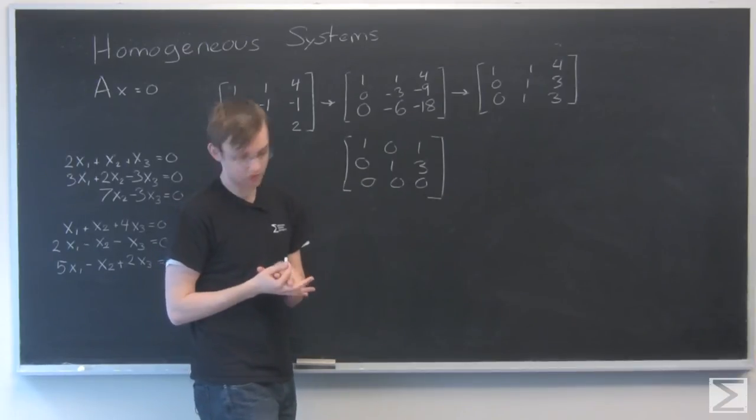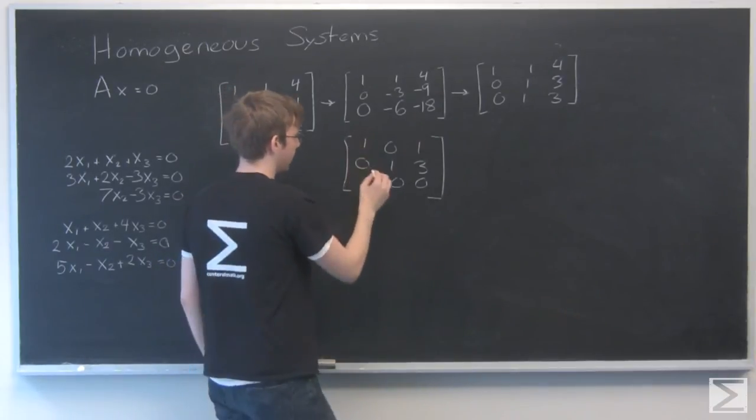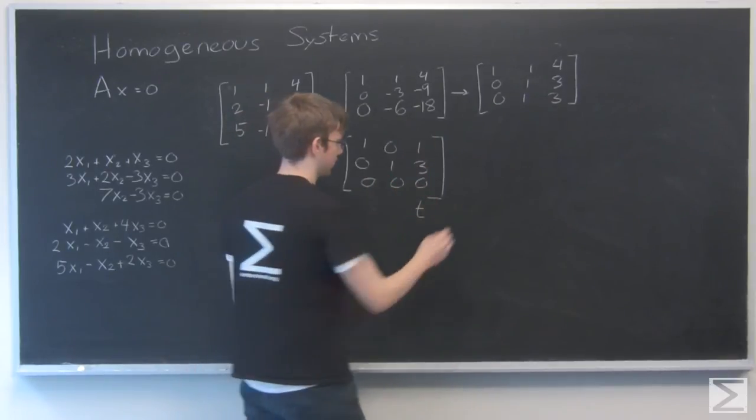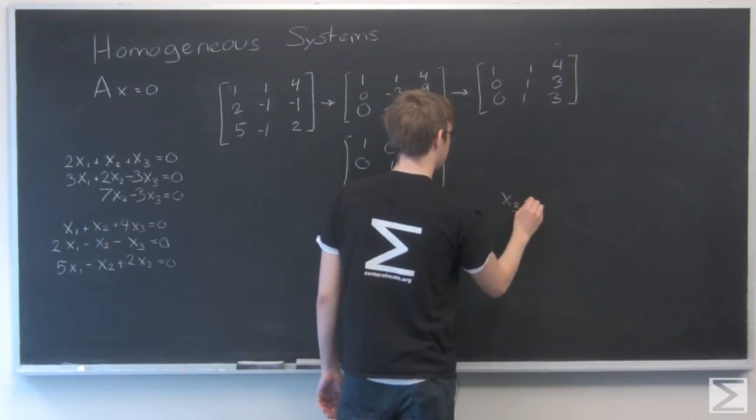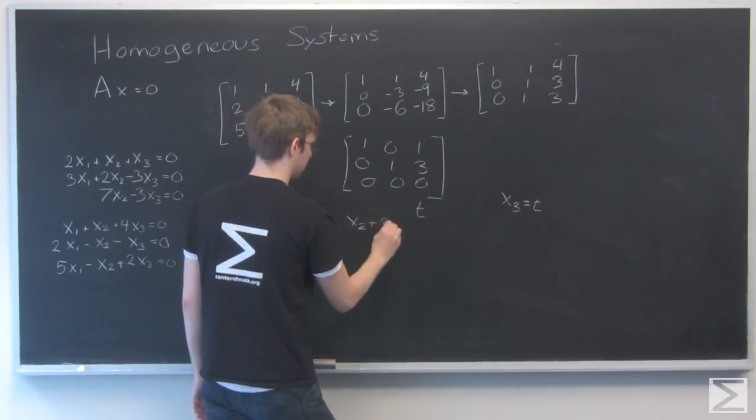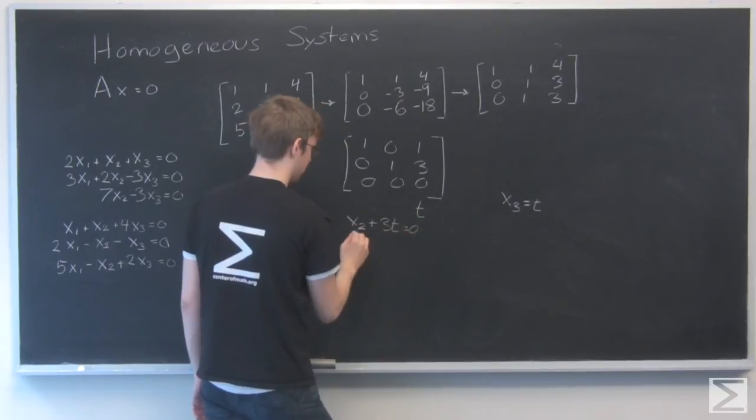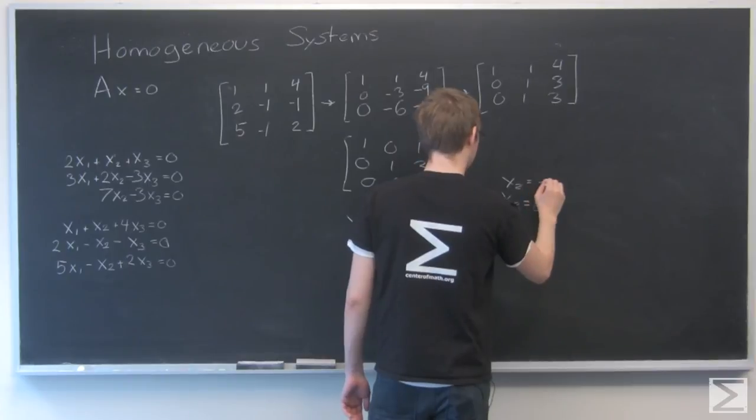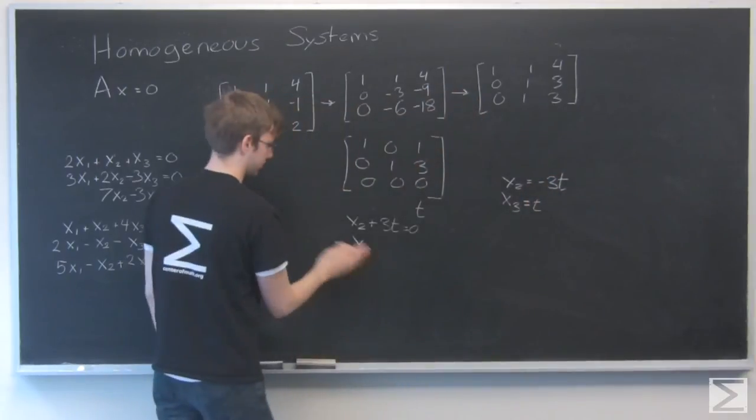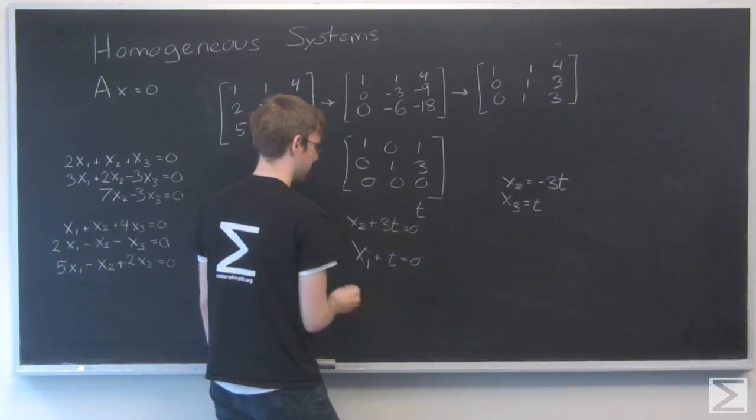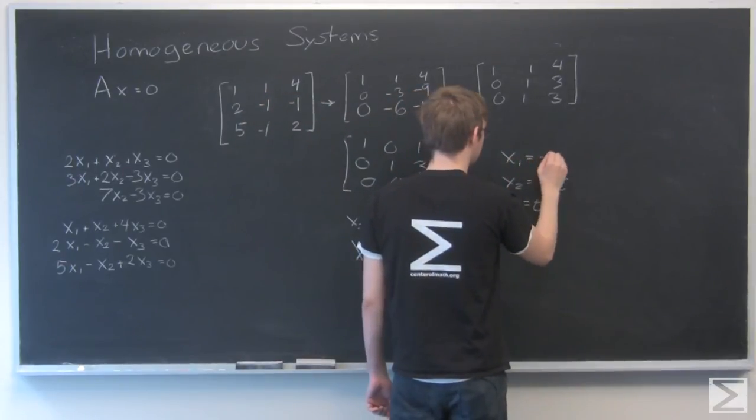So we are here in row echelon form, reduced row echelon form, and x3 is going to be my free variable. I'm going to call that t. So x3 equals t. Here x2 plus 3t equals 0, so x2 equals minus 3t. And x1 plus t equals 0, so x1 equals minus t.